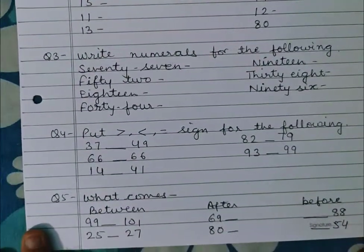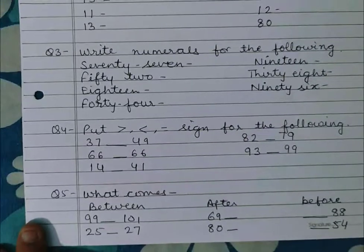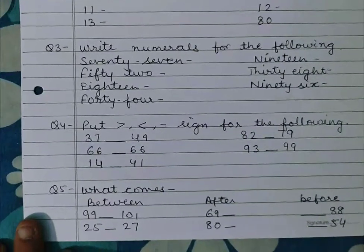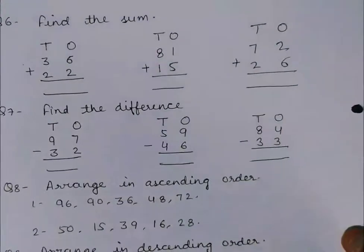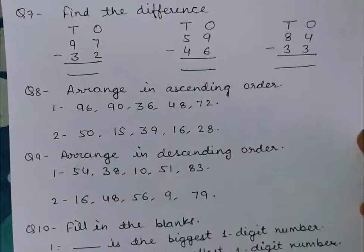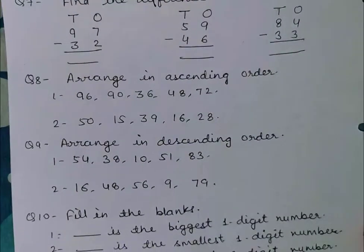Question number 5: What comes between, after, and before? Question number 6: Find the sum. Number 7: Find the difference. Number 8: Arrange in ascending order.